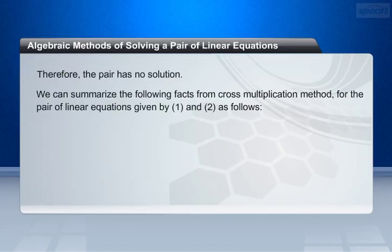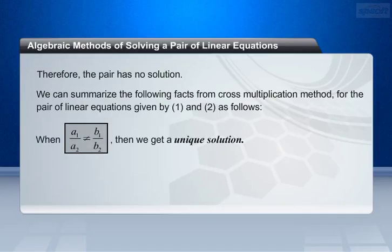We can summarize the following facts from cross multiplication method for the pair of linear equations given by equation 1 and equation 2 as follows. When a1 by a2 is not equal to b1 by b2, then we get a unique solution.